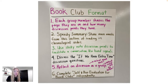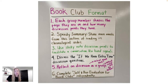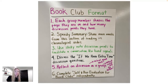Step three in the format is to use sticky note discussion points to facilitate a conversation, along with hand signals. In literature circles, I teach students to do a thumbs up on the table when they have a new discussion point, and two fingers on the table when they want to add on. We always prioritize students who want to add on before moving to a new discussion point, which really encourages deeper discussion. Students bring those hand signals from literature circles into book club.